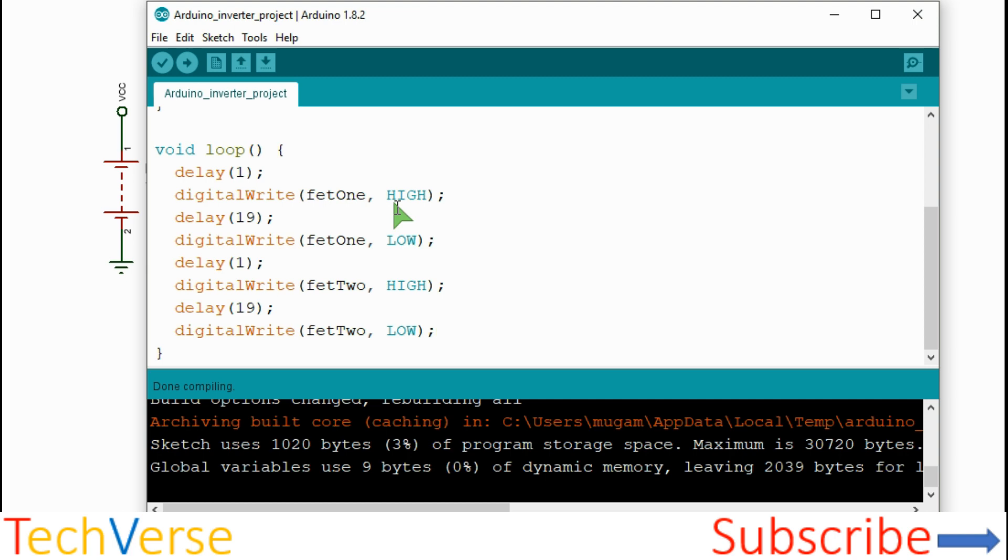Then delay for 19 milliseconds, then turn it low. So if you look at it, the 1 and 19, they make 20 milliseconds.